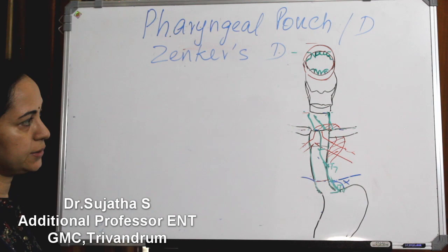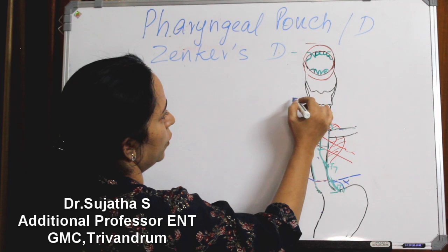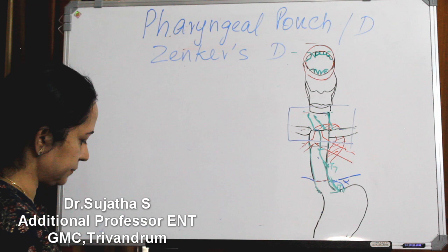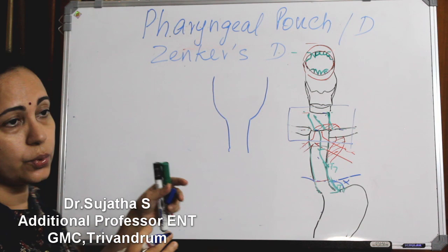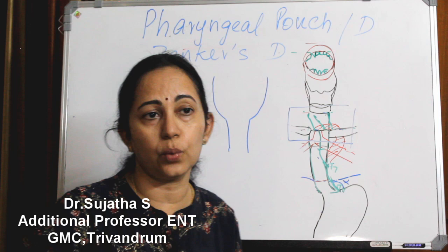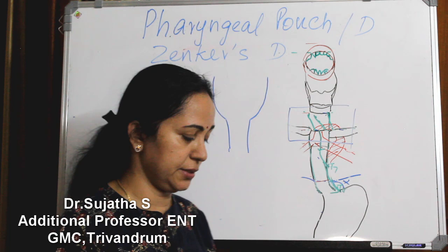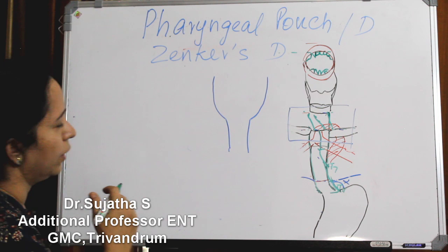This is a posterior view of the esophagus. If I am drawing only this part of the esophagus - the cricopharynx is the most constrictor part. In this posterior view, the inferior constrictor is a muscle that has an upper thyropharyngeus and a lower cricopharyngeus part. The thyropharyngeus part has oblique fibers going backwards and upwards.